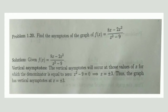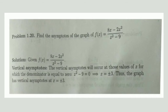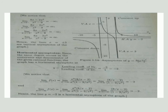The next problem: find the asymptotes of f(x) = (8x - 2x²)/(x² - 9). First checking the vertical asymptotes: x² - 9 = 0 gives x² = 9, so x = ±3. Therefore the given function has two vertical asymptotes: x = +3 and x = -3.